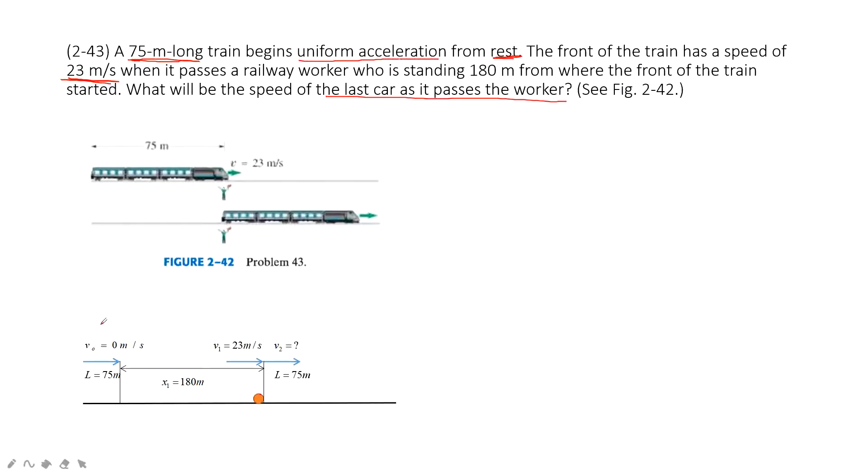And this is the initial state, stationary. And then this is the first state, the car comes there, the head matches with the worker. And then this is the state where the tail of the train matches with the worker. And in this one, we can see the acceleration is constant.